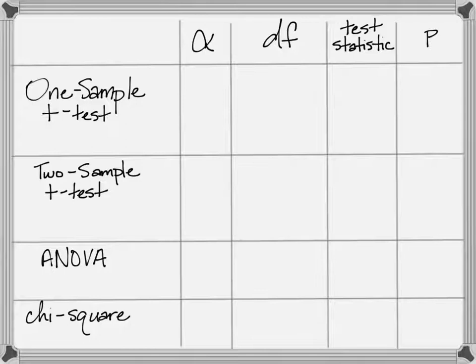These are some of the values that you'll see in the papers you're reading: alpha, degrees of freedom, p-values, and test statistics.